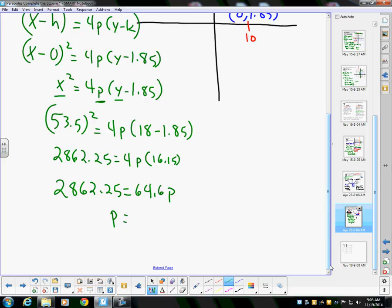Therefore p is just simply going to be 2862.25 divided by 64.6, so I have a decimal: 44.3114. So I'm going to call this p = 44.31.